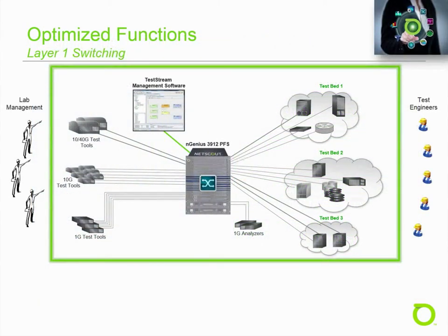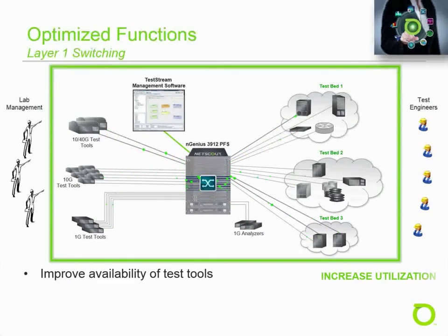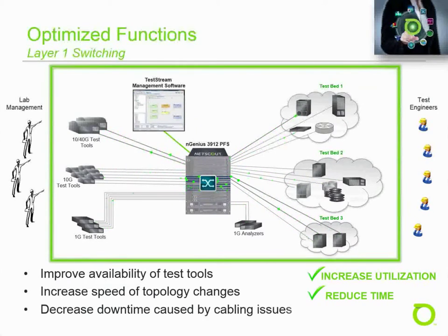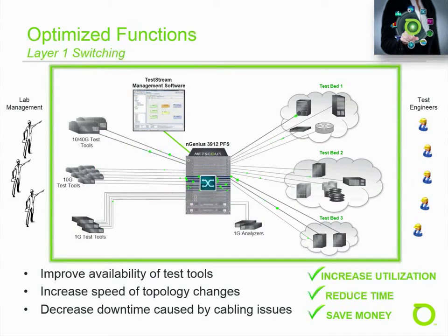First, we have layer 1 switching. Layer 1 switching enables lab managers to quickly build test topologies from pooled resources. This greatly improves the availability of test tools and increases the speed of topology changes. Since all configuration changes are done remotely via software, downtime caused by failed cables and dirty connectors is nearly eliminated. Additionally, automated layer 1 switching allows cyber and security test labs to quickly rebuild network topologies during test cycles. All layer 1 connections are secure and are not subject to crosstalk. Topology and configuration changes are logged in audit trails as required by lab policy.